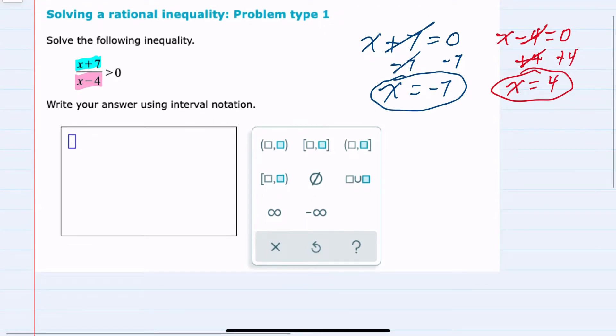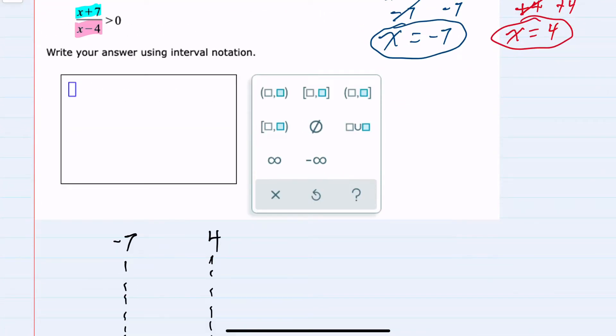Next, I'll take those two points and create a chart. The two zeros that we found, negative 7 and 4, putting them in order from smallest to largest, I would put the negative 7 first. And I'll begin by looking at that numerator, x plus 7. If I substitute in a value for x that's greater than negative 7, this would be a positive expression. And if I substitute a value in less than negative 7, then it would be negative.